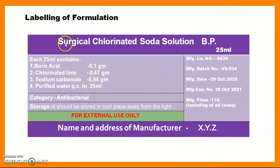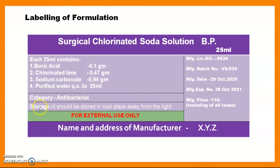The label should contain: name of the preparation — Surgical Chlorinated Soda Solution BP; net volume — 25 ml at the top right; each 25 ml contains: boric acid 0.1 g, chlorinated lime 0.47 g, sodium carbonate 5.94 g, purified water QS to 25 ml. Category: antibacterial/bactericide. Storage: cool place away from light, in an amber-colored bottle. The label must state 'For External Use Only' and this should be highlighted with a proper color.